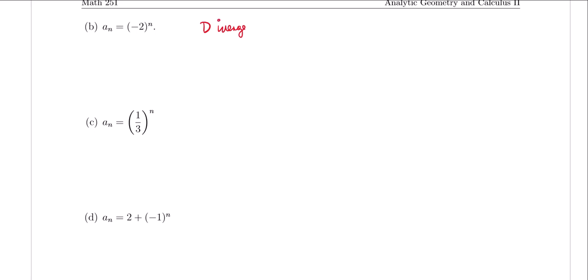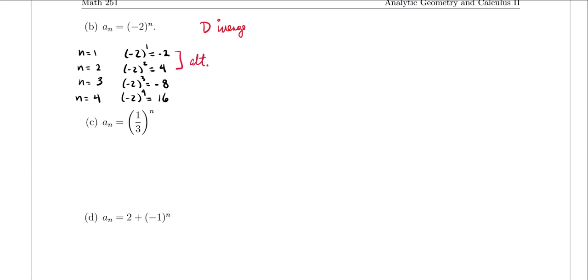Notice that we're taking negative 2 raised to some power n. If we try a couple of examples: n=1 gives negative 2; n=2 gives 4; n=3 gives negative 8; n=4 gives positive 16. You're always alternating signs. Whenever we're finding a limit, we want to be approaching a single value, but as you keep alternating signs — positive, negative, positive, negative — you're never going to reach a particular number. So the limit as n approaches infinity of (-2)^n does not exist, and the sequence diverges.